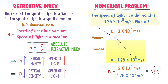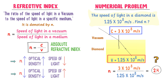So the refractive index of diamond is 2.4. This means that the speed of light is 2.4 times slower in diamond than the speed of light in vacuum. By this method, we can easily find the absolute refractive index of any medium.